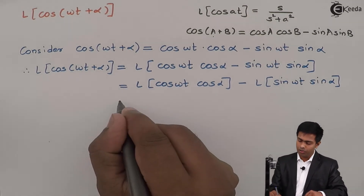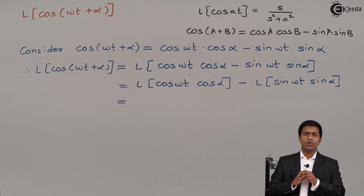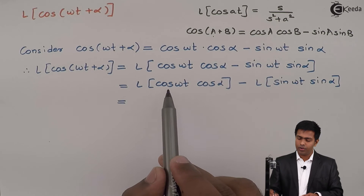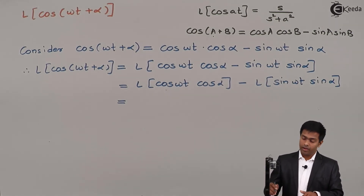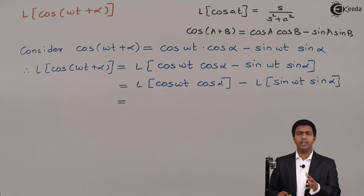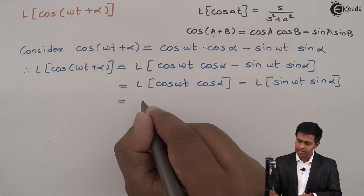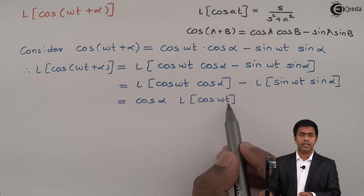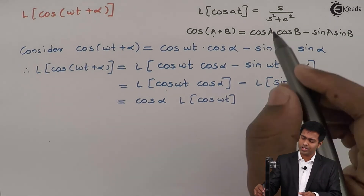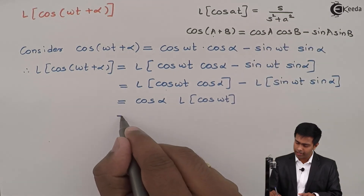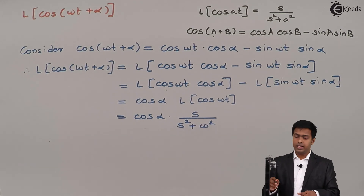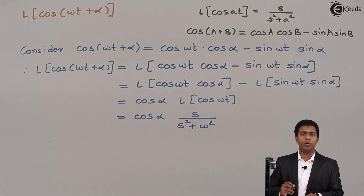Now let us find the value of the first term. We use the Laplace transform to transform a function of t into a function of s. In the first term, we have two functions: cos(ωt) and cosα. Since cosα does not have t, it is a constant and can be taken outside. Hence, cosα comes outside and we find L{cos(ωt)}, giving cosα · s/(s² + ω²), since the value of A here is ω.